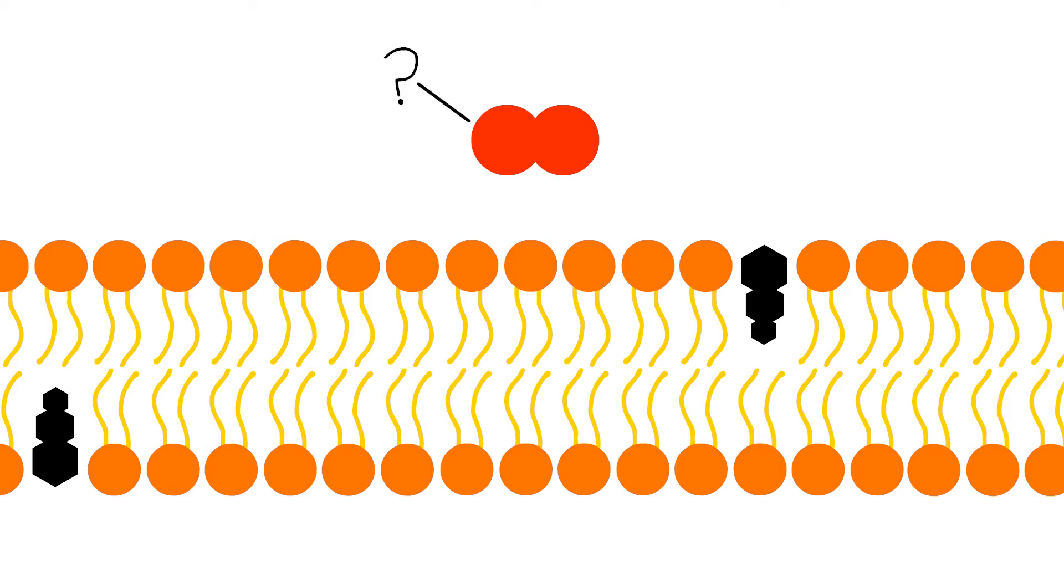He wonders out loud, what could it be like inside of a cell? Annie tells him that he has found a cholesterol molecule, which helps to maintain a certain fluidity in the bilayer.